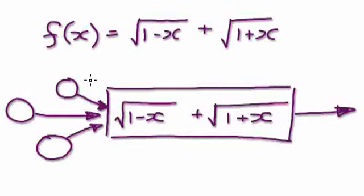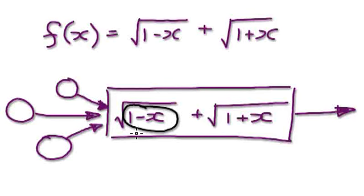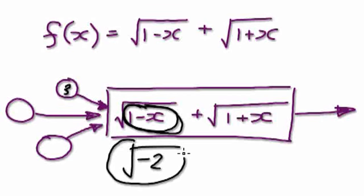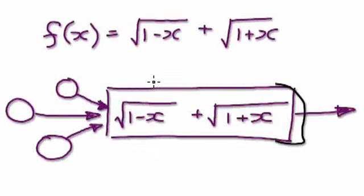So the domain is what you can put into the machine that will not break the machine down. If you look at this here, if you put, say, 3 into this machine, then 1 take away 3 will be negative 2. So this bit here will break down, and if this bit breaks down, the whole machine breaks down. So the domain is what you can put into the machine where the machine will still work.